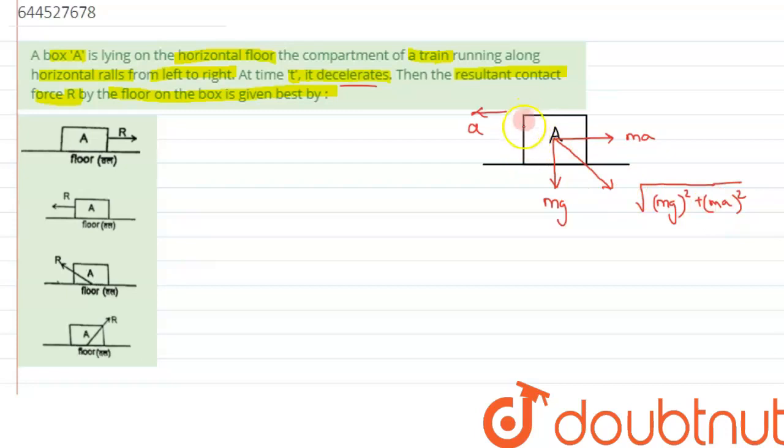Now we can see this is the action which is being imparted by the block on the floor, but we have been asked in the question to calculate the force R by the floor on the box. So we have to just reverse the situation over here.